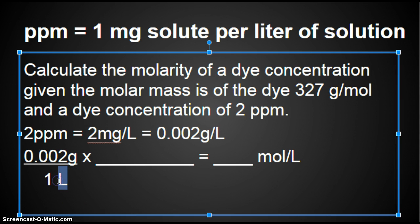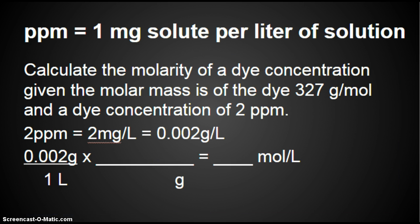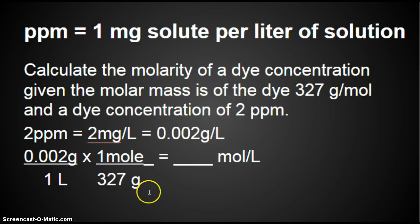We already have the liters part. What do we need to convert the grams into? We need to convert them into moles. What unit has to go on the bottom of my second fraction? It has to be grams so they cancel. I'm changing my grams to moles. We get 327 grams for every one mole, and then we put it in our calculator.